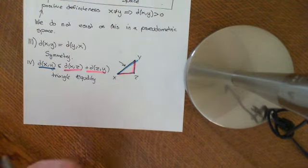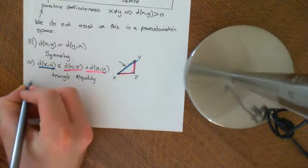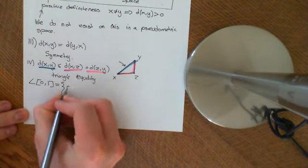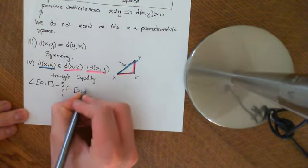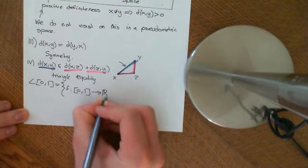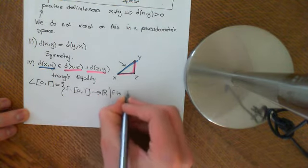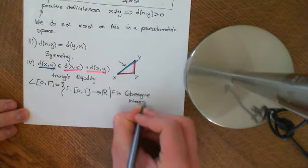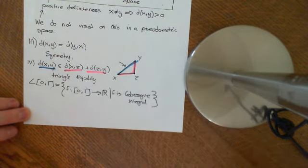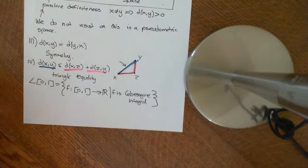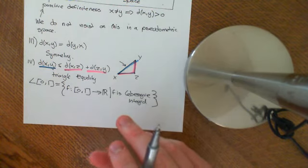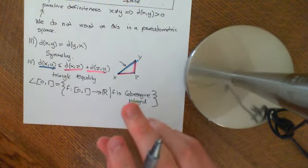The pseudometric space we'll look at is quite advanced, requiring the theory of Lebesgue integration. The set is L(0,1), the set of all functions F mapping the interval 0 to 1 onto the real line such that F is Lebesgue integrable.